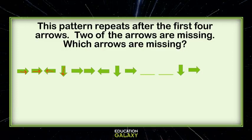So it should continue to repeat. So it should be right, right, left, down. There we go. We found the missing arrows.